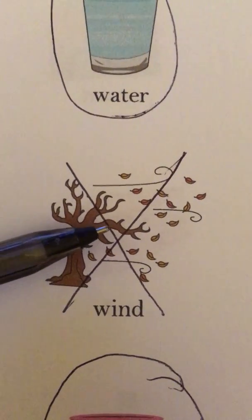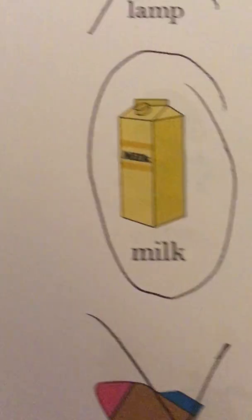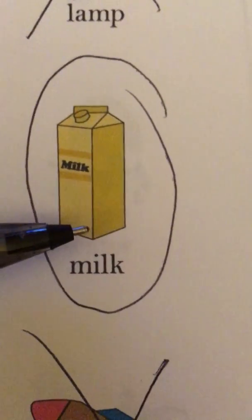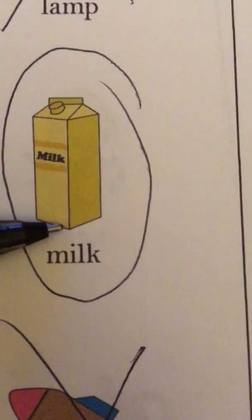Wind is not a liquid, so we put an X on it. Milk is a liquid, so we put a circle around it.